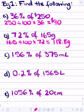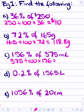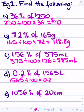Next: 156% of 375 milliliters. That's 375 divided by 100 times by 156. The percent here is above 100, which is fine — it just means the result will be more than the original amount. We get 585 milliliters. Then 0.2% of 1565 liters: 1565 divided by 100 times by 0.2 equals 3.13 liters.